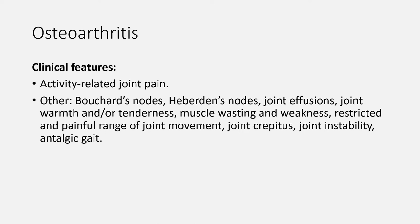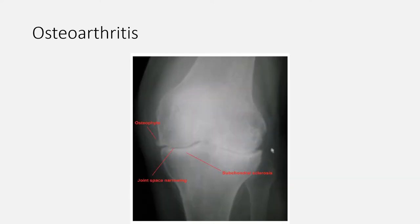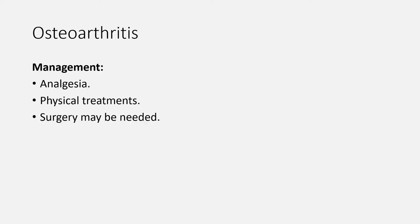Routine x-ray of the affected joints is not usually needed to confirm the diagnosis. But if x-ray is done, typical radiological features of osteoarthritis include: subchondral bone thickening and/or cysts, osteophyte formation (new bone formation at joint margins), and loss or narrowing of the joint space. For management, prescribe analgesia and recommend physical treatments such as strengthening exercises, physiotherapy, local heat, and cold packs. Surgery is used if the person has joint symptoms with a substantial impact on quality of life and are refractory to non-surgical treatment.